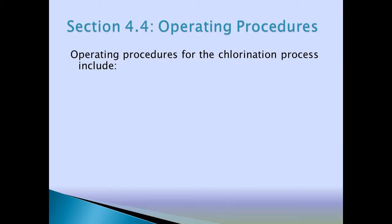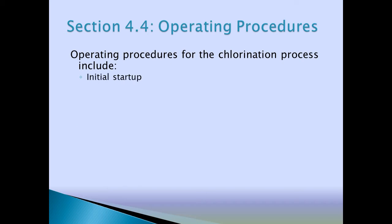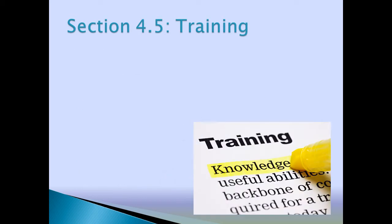For handling your chemical on your risk management plan: operation procedures, operators, and maintenance personnel shall review the Risk Management or Process Safety Management plan annually and then they have to sign off that they reviewed it. This means there's a yearly acknowledgement form, and you'll see that in Section 4 of your risk management plan.